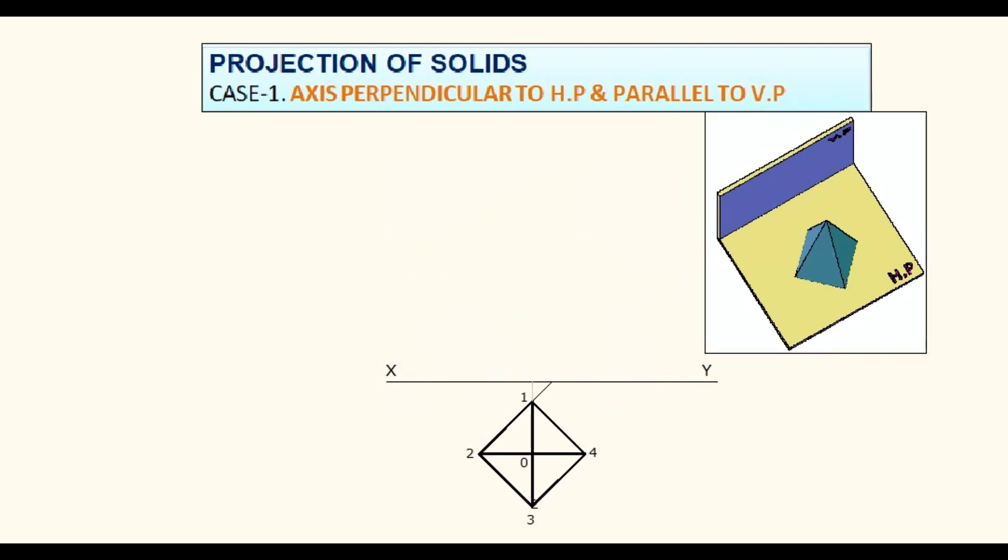Project that apex point and maintain the height of the pyramid in the elevation above the XY line. Project the base corners to XY line. Darken all the visible slant edges. Name the corners of the elevation. Show the dimensions.